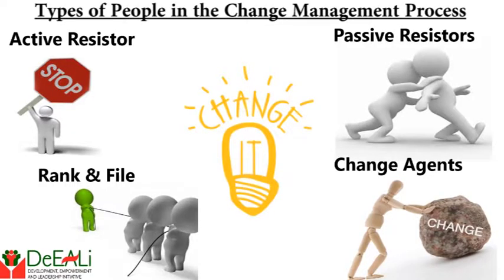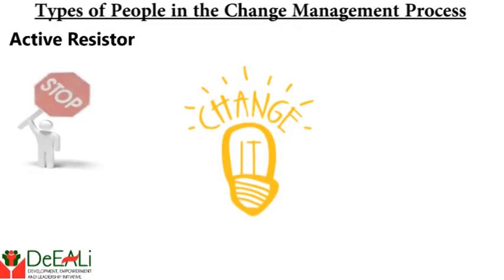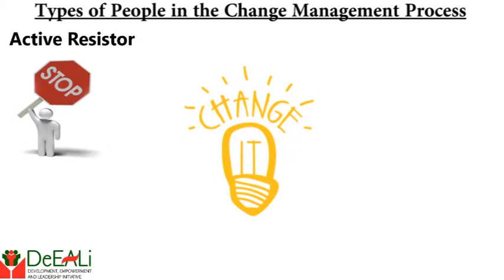We identified the four: the active resistor, the passive resistor, the rank and file, and the change agent. Number one is the active resistor. These are the people that will say no to the change — they will say it to your face. They will take steps to sabotage the effort and halt it.